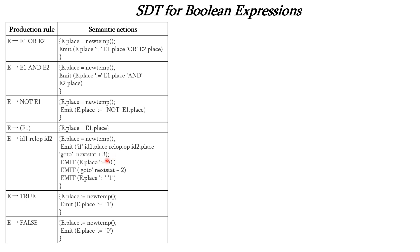At line 103 we have E.place = 1, meaning true — 1 indicates true. So if the condition is true, it goes to the truth assignment. If the condition is false, it falls to line 101 where E.place = 0 indicating false. To skip the true statement when the condition is false, we emit goto next-statement plus 2 at line 102. So 102 plus 2 goes to line 104, skipping the true assignment at 103.